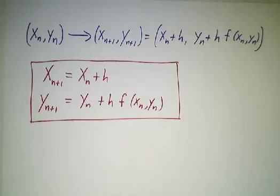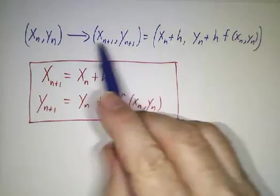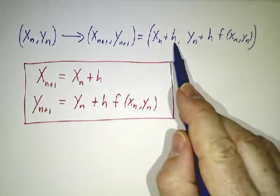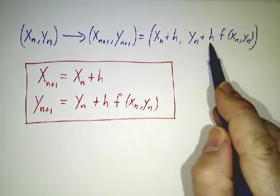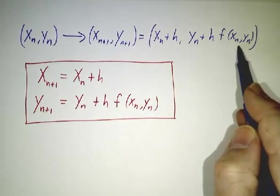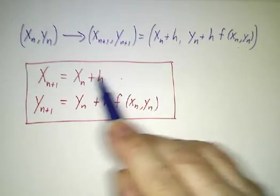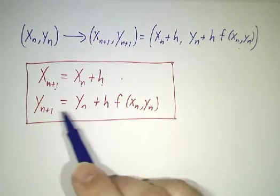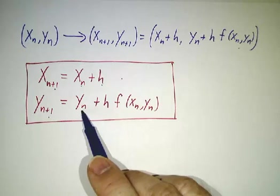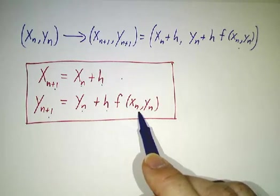So, in general, you go from one point to the next point by going a distance h sideways and h times the slope upwards. In other words, the new x is the old x plus h, the new y is the old y plus h times the slope given by the direction field.